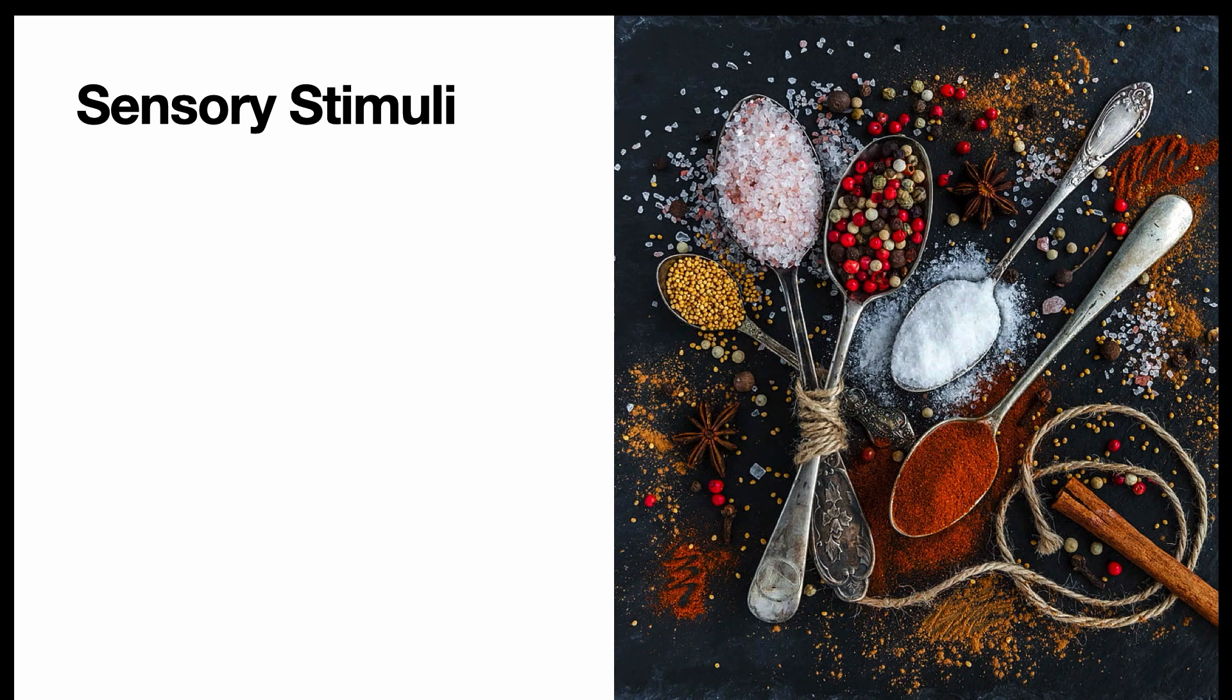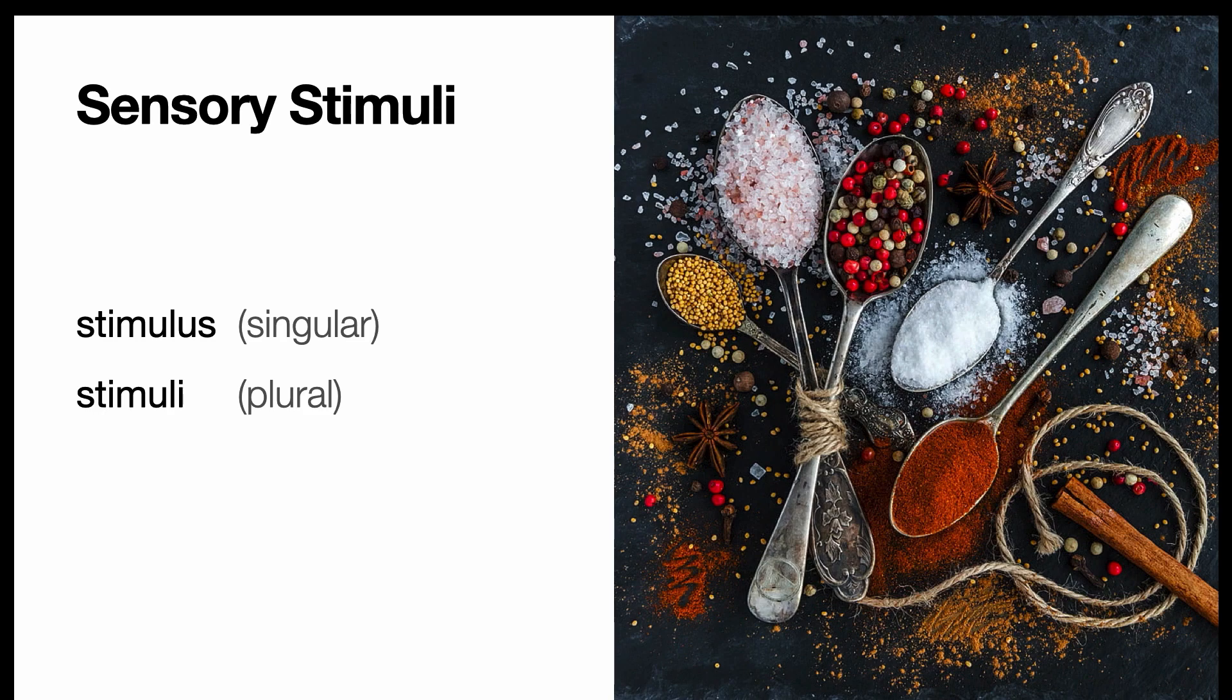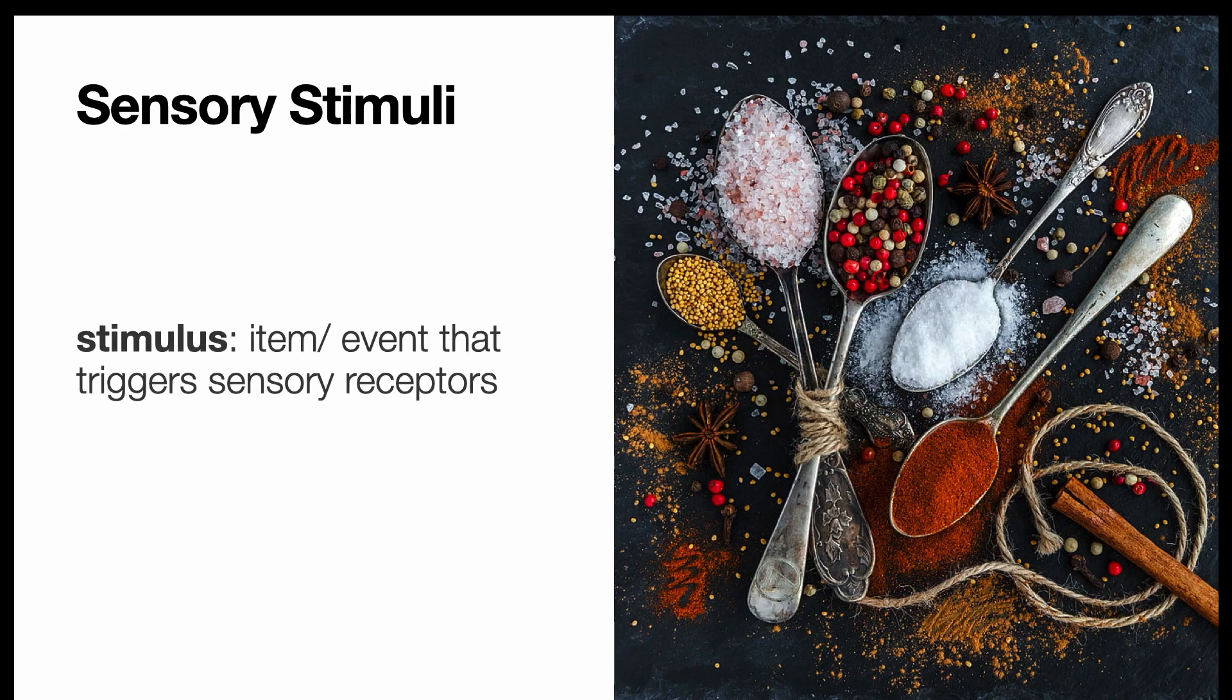Starting with sensory stimuli, the first thing to point out is that the word stimuli is plural. Just one is called a stimulus. And a stimulus, in the context of sensation, is an item or event that triggers sensory receptors. It is what gets transduced by the sensory receptors into a neural signal the brain can understand.